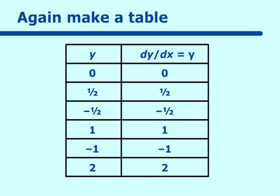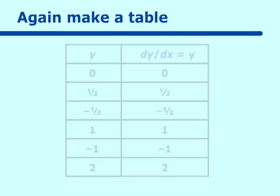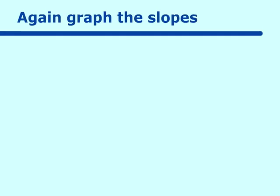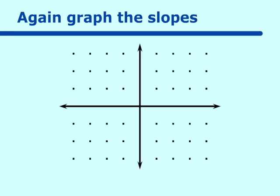This time it doesn't matter what x is — we are just looking at the y values. On the grid paper, when y is equal to 0, dy/dx is equal to 0, so this is all along the axis. When y is equal to one half, dy/dx is equal to one half, so all the one-halves on y have a slope of one half. When y is equal to 1, the slope is 1. When y is equal to 2, the slope is 2.